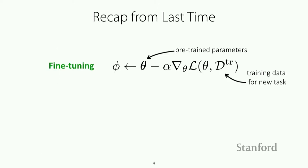Let's recap from last time. We talked about how fine-tuning is a very effective way for leveraging information from previous datasets by pre-training the parameters on those datasets and then fine-tuning by running gradient descent, or your favorite optimizer, to reuse those features that were learned for learning on your new dataset.